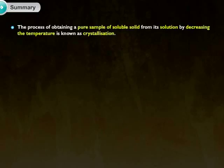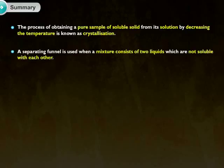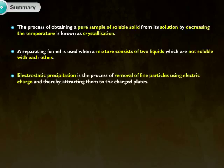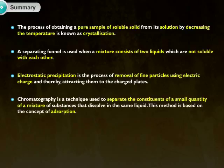The process of obtaining a pure sample of soluble solid from its solution by decreasing the temperature is known as crystallization. A separating funnel is used when a mixture consists of two liquids which are not soluble with each other. Electrostatic precipitation is the process of removal of fine particles using electric charge and thereby attracting them to the charged plates. Chromatography is a technique used to separate the constituents of a small quantity of a mixture of substances that dissolve in the same liquid. This method is based on the concept of adsorption.